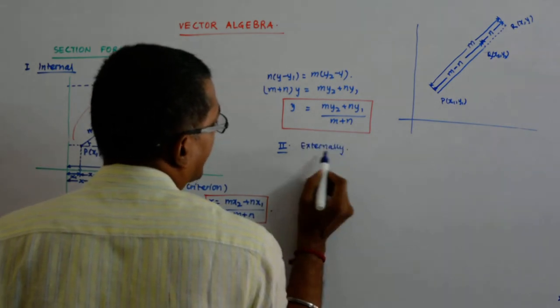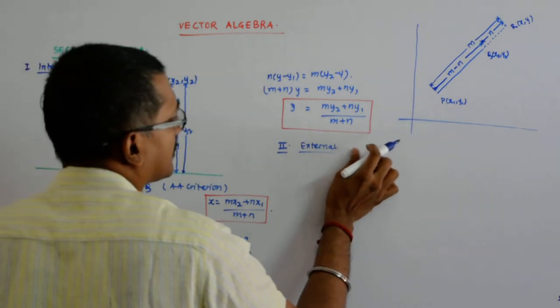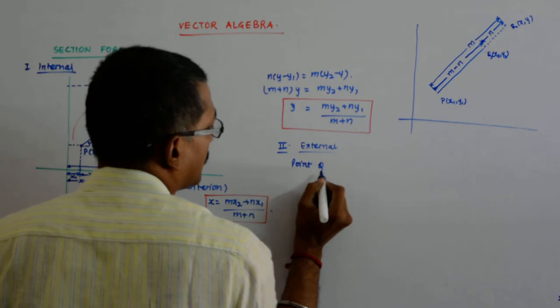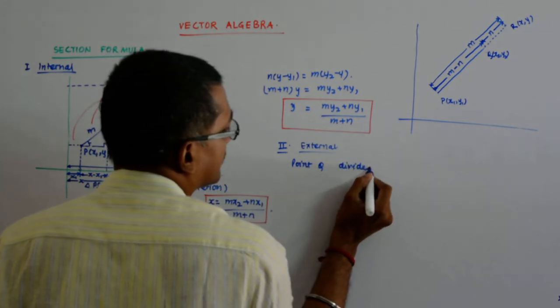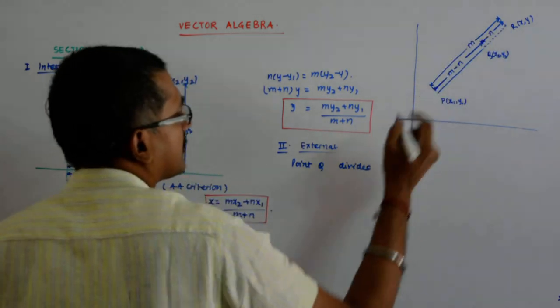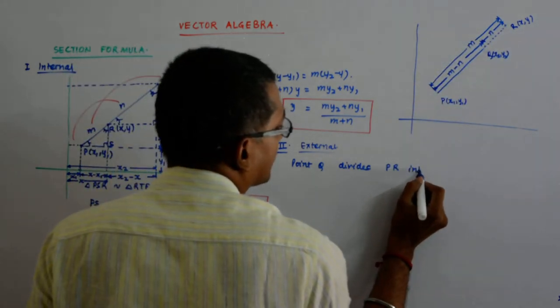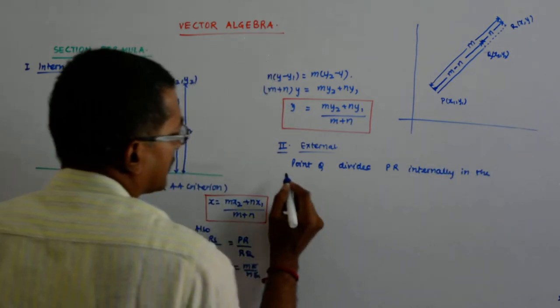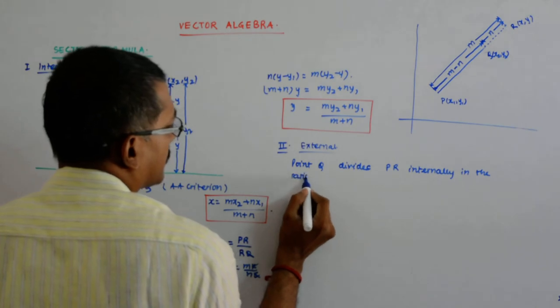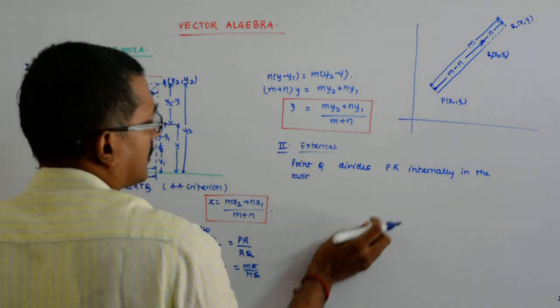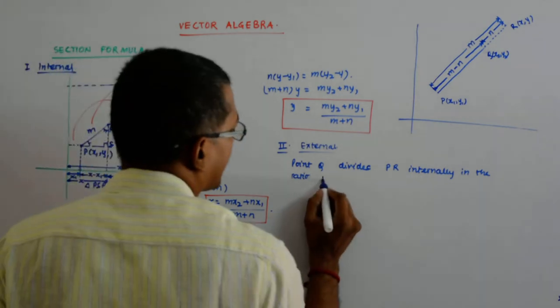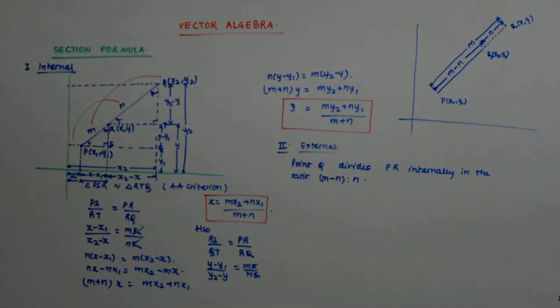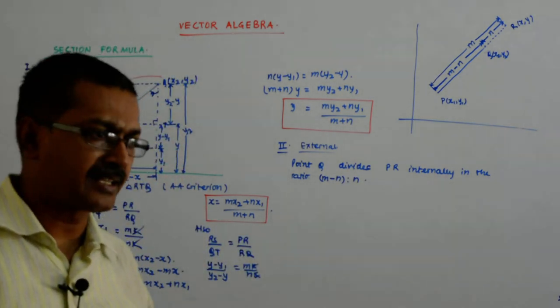so what happens? I can say point q divides p r internally in the ratio, in the ratio m minus n is to n, m minus n is to n and I can apply the same formula.